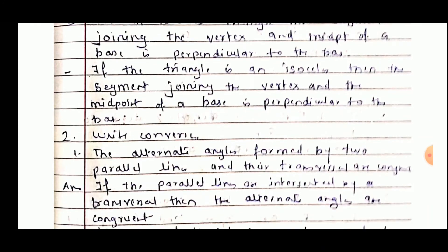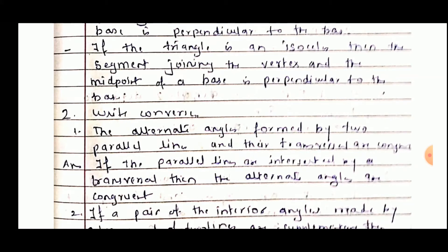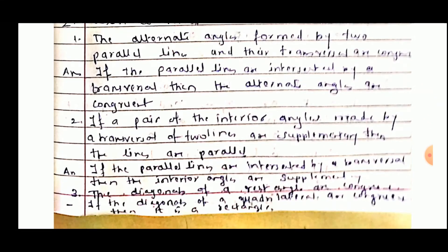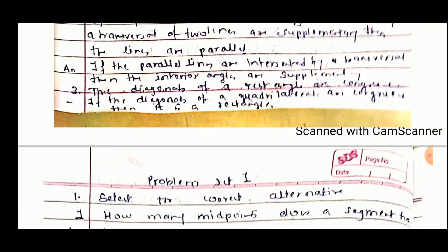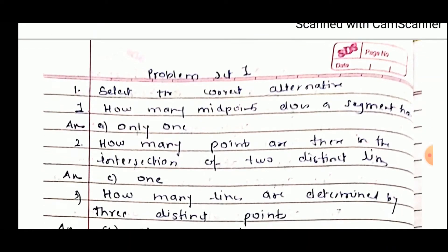Now write the converses — interchange the antecedent and consequent of each statement. First: the alternate angles found by two parallel lines and their transversal are congruent — converse: if a pair of alternate angles made by a transversal of two lines are congruent, then the lines are parallel. Second: if a pair of interior angles made by a transversal of two lines are supplementary, then the two lines are parallel — converse: if the parallel lines are intersected by a transversal, then the interior angles are supplementary. Third: if the diagonals of a quadrilateral are congruent, then it is a rectangle.